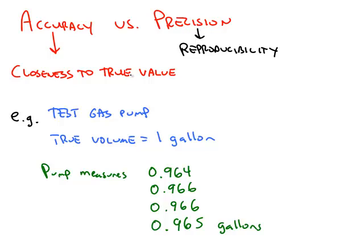Accuracy is how close your values are to the true value that you're trying to measure. Precision is how reproducible your measurements are.